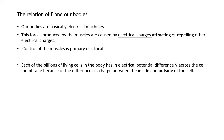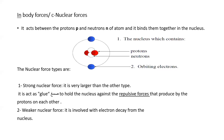That means we have two different actions that the electrical charge controls in my muscles. Control of the muscles is primarily electrical. Each of the billions of living cells in the body has an electrical potential difference — that means our living cells have voltage across the cell membranes, because of the difference in charge between inside and outside of the cell.